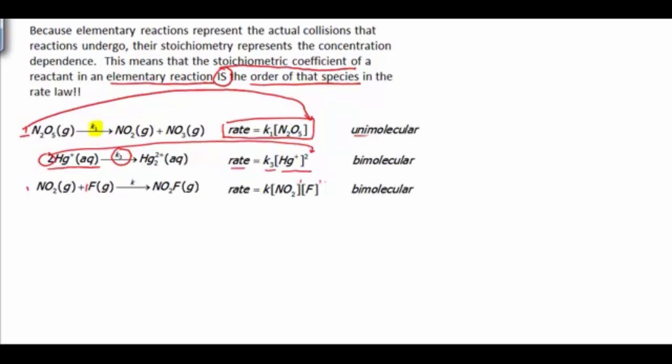So these tricks that we've just learned will help us finish up what we need to understand to validate a mechanism. We've learned how to add them up so that we can check to see if they match what the overall reaction is. We've learned how to write the rate law for an elementary reaction. And we also know how to identify things that are catalysts and intermediates. And that's what we need to be able to do when we're doing our chemical kinetics problems.